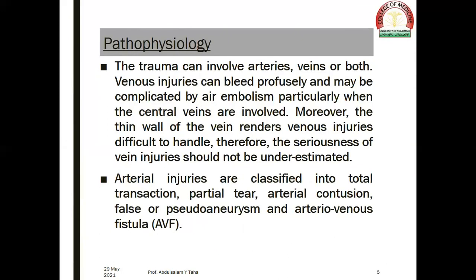The trauma can involve the arteries, veins, or both. Venous injuries may bleed profusely and may be complicated by air embolism, particularly when central veins are involved. Moreover, the thin wall of veins renders venous injuries difficult to handle; therefore, their seriousness should not be underestimated. Arterial injuries are classified into total transection, partial tear, arterial contusion, false or pseudoaneurysm, and arteriovenous fistula.